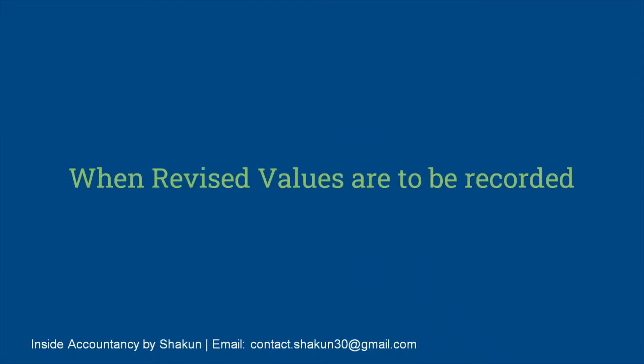Moving on, we'll be talking about the first method in this video — that is, when revised values are to be recorded. Whenever the firm decides to show the revised or changed values, a separate account is prepared which is known as the revaluation account or profit and loss adjustment account. In this method, certain journal entries are to be passed.